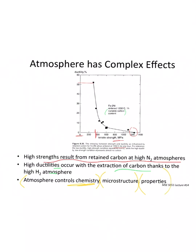Just as polymer binder formulations are proprietary, furnace atmospheres are also closely guarded. Papers will say 'we used an optimized atmosphere' without specifying it because that's a market advantage. A company might have spent 10 years figuring out that 93% argon/7% hydrogen is optimal for them, and they are not going to share that with competitors. These things become very important competitive advantages.